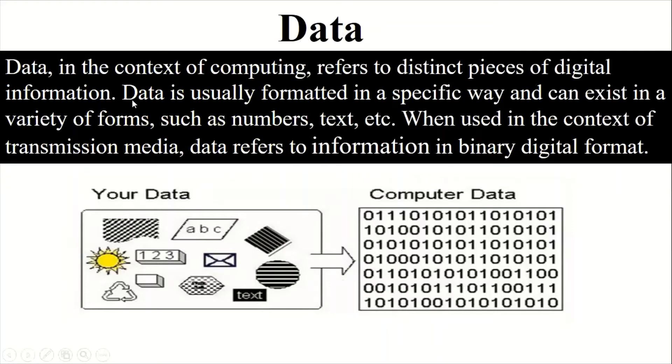Data is usually formatted in a specific way and can exist in a variety of forms. It means that data could be in form of digits or could be in form of any kind of text formatted document, such as numbers, text. When used in the context of transmission media, data refers to information in binary digital form.